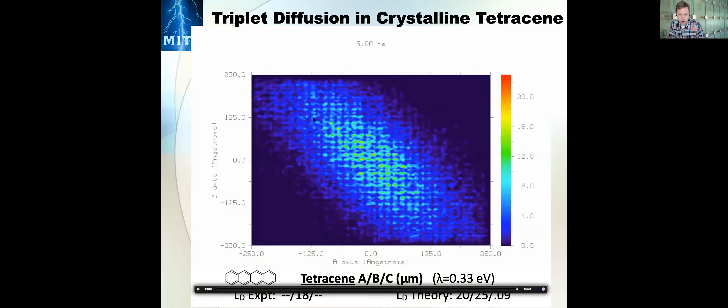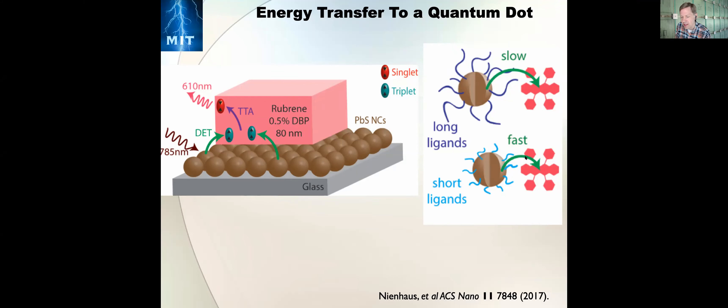Using a Marcus-like expression, the rate of energy transfer is proportional to the coupling squared times some classical density of states. Once you have those couplings, you can look at diffusion of triplets in an organic material. For example, for triplet diffusion in tetracene, mimicking an experiment with a laser spot, you can watch how triplets diffuse through the material after being created. You can see anisotropy along the crystal lattice — diffusion is faster along the anti-diagonal of the material. But what I actually wanted to look at was triplet hopping between a nanocrystal and the organic material.